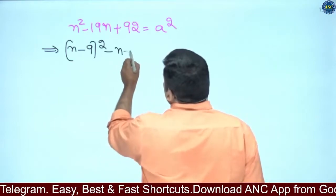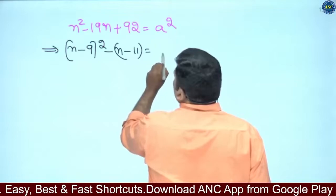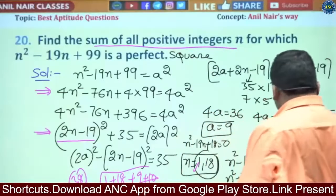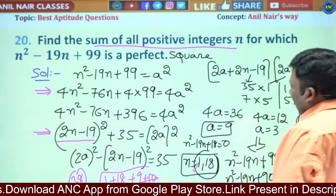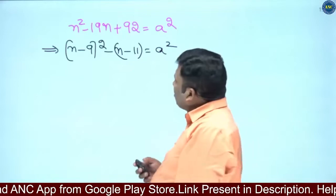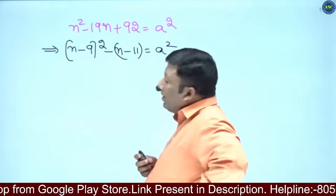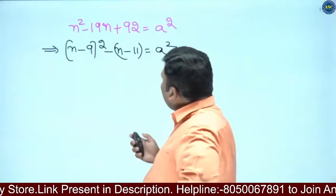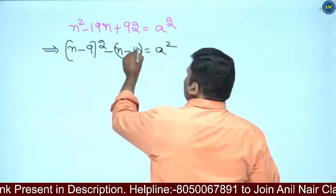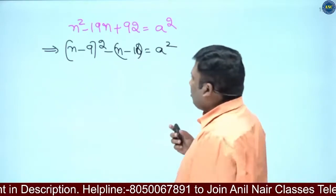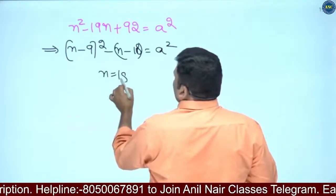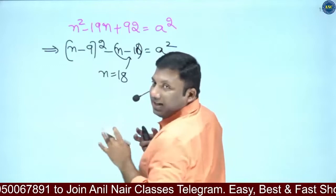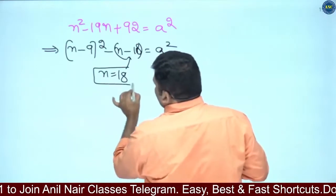How much is remaining? Minus 11, equivalent to N squared. Suppose if you see here: 10 and 9 and 1 and 18. If N value is 18, this will become 0. 18 minus 9 is 9 squared, which is 81. A squared is 81, so A value will be a perfect square. Therefore N equals 18 is possible.